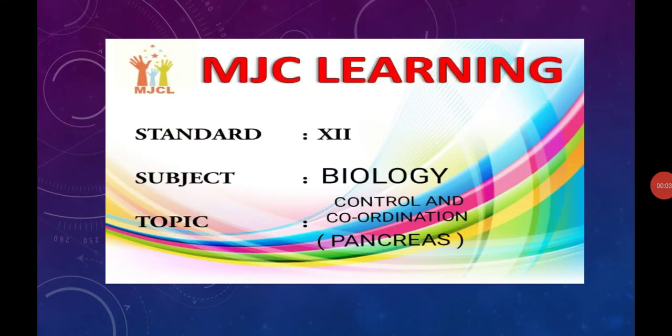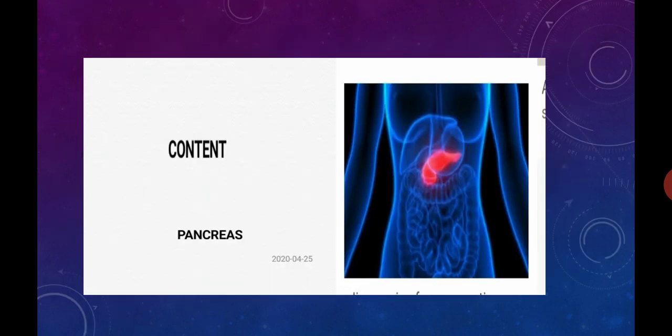Hello students, myself Mr. Santosh Pawar welcomes you all in MGC Learning. In our last lecture we had seen about two endocrine glands: parathyroid gland and thymus gland. Parathyroid gland secretes a hormone called PTH, known as a hypercalcemic hormone because it increases the level of calcium in the blood. The thymus gland secretes a hormone called thymosin, which plays an important role in the development of the immune system in our body.